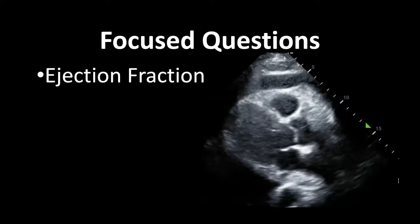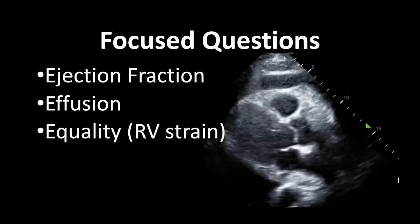We always look at ejection fraction — meaning how well is the heart squeezing? Is it normal or is it depressed? We then look for pericardial effusions, and sometimes we can see pleural effusions as well. And then often we'll look at whether there's so much fluid that it's causing tamponade physiology. The third question we ask is equality — is there a difference between the size of the right ventricle and the left ventricle that can suggest right ventricular strain? These are the main ones we do with just point-of-care ultrasound.